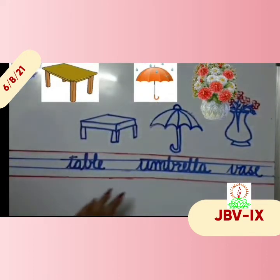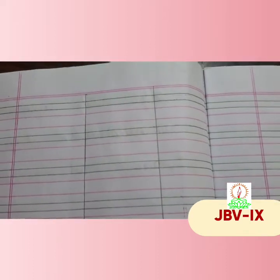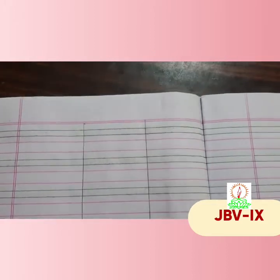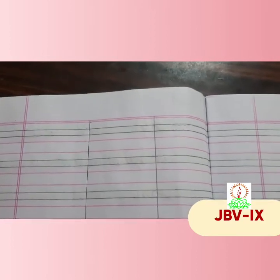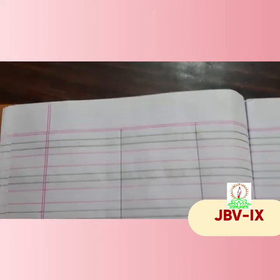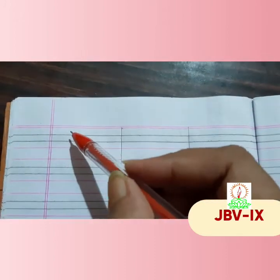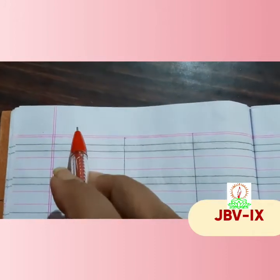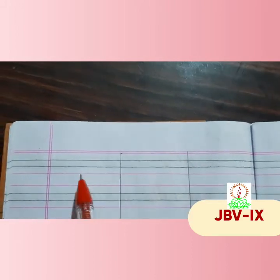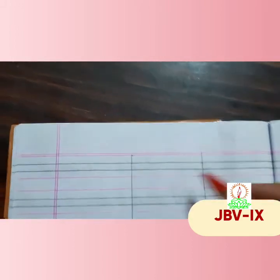Now these three words we will be writing in the notebook. Children, we have learnt the spellings of three common words — T for table, U for umbrella, and V for vase. Now we will write in the notebook. Parents, please write this column so that they can write two times by seeing this column.